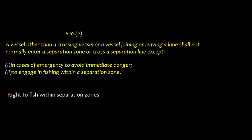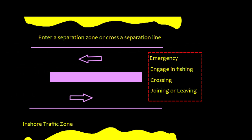Rule 10E concerns the traffic separation zone. A vessel may enter a traffic separation zone in cases of emergency to avoid immediate danger, or to engage in fishing within the separation zone. In summary, you can enter a separation zone or cross the separation line in an emergency, to engage in fishing, or when crossing, joining, or leaving a lane.